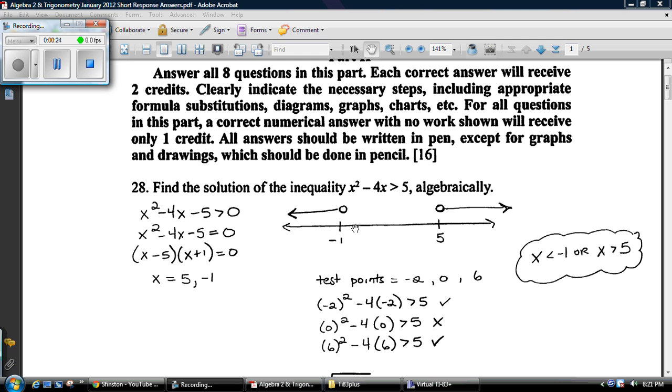Then you just need to test some points around them, and I chose negative 2, 0, and 6. You plug them into the original equation and you find out what happens. It turns out stuff in this territory works, stuff in this territory does not work, stuff in this territory works. So here's what the answer looks like if you were to graph it out on a number line, and here's what it looks like written out as an equation.